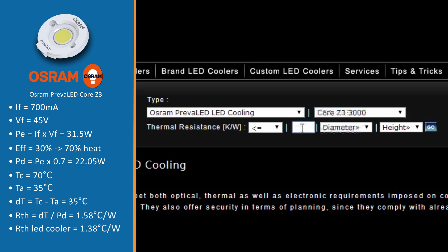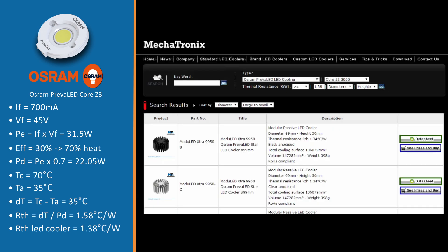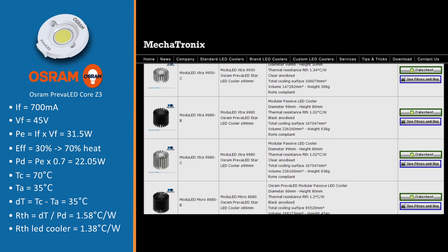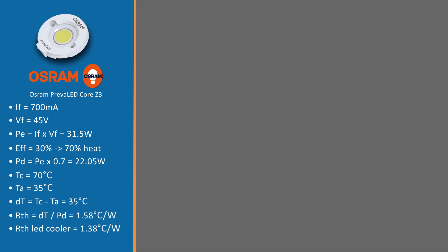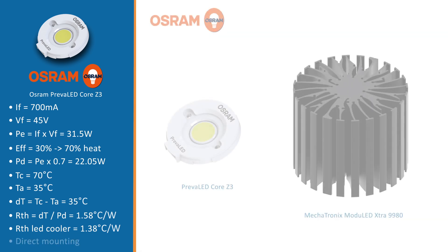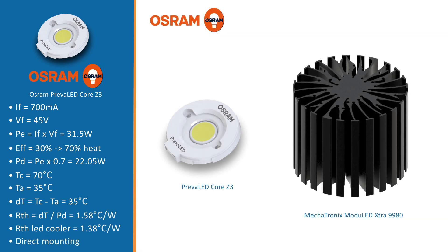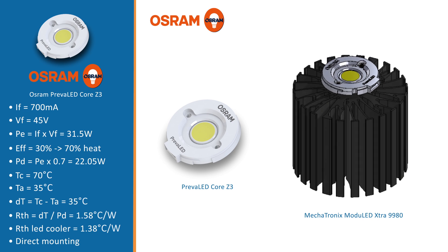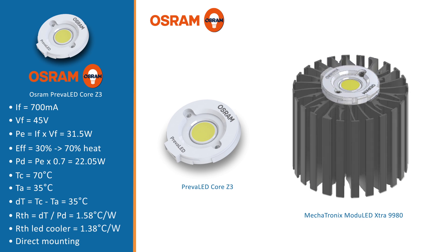Then you fill out the thermal resistance we have been calculating: 1.38 degrees Celsius per watt. And you click on go. The results which appear now below are all thermally and mechanically compatible. That means that any of these LED coolers will keep the TC point at 70 degrees Celsius or lower, as required. And secondly, all the Osram Prevalet Core modules can be mounted directly on these LED coolers.